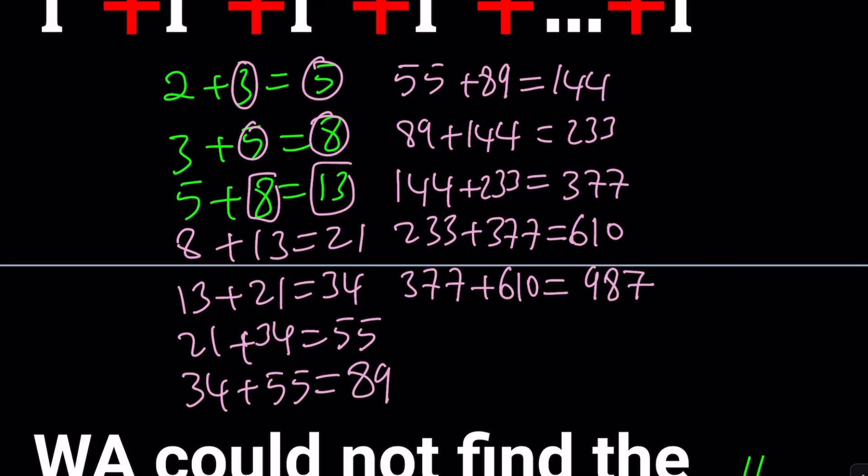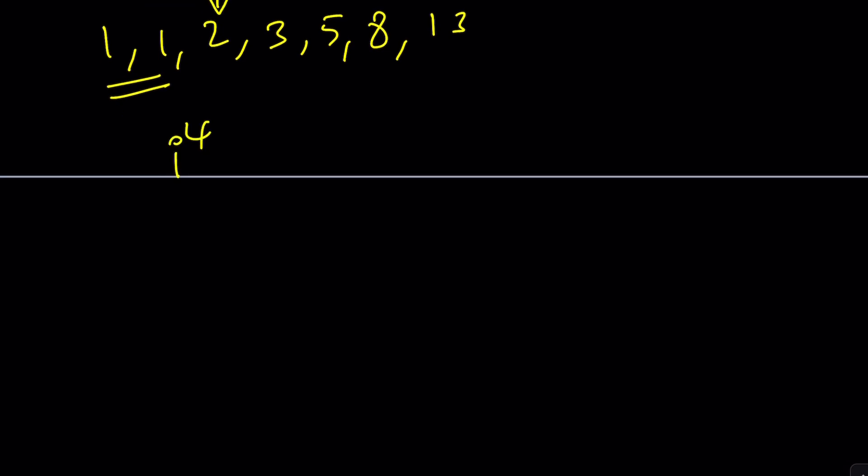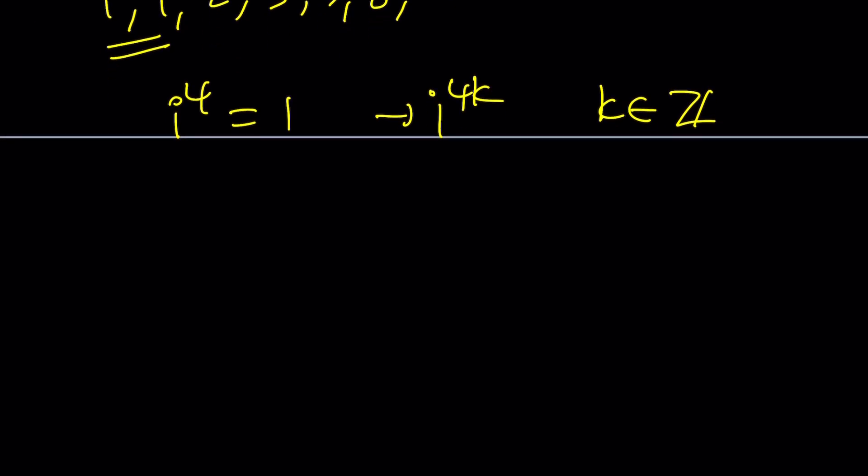But here's the thing. We're going to be adding powers of i. And what is important when it comes to adding powers of i? i to the fourth power, because it's 1. Awesome. So we're going to try to get i to the fourth, or any multiple of 4 will do, like i to the 4k, where k is an integer.